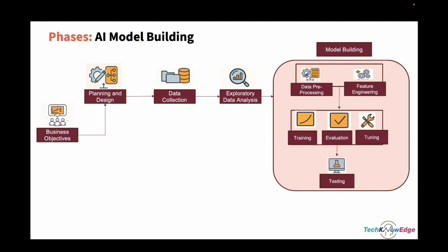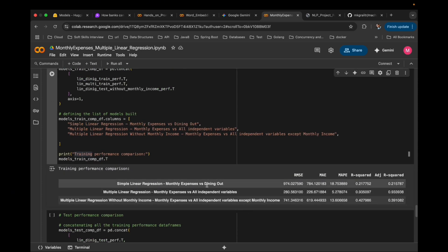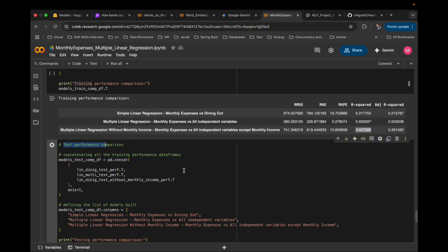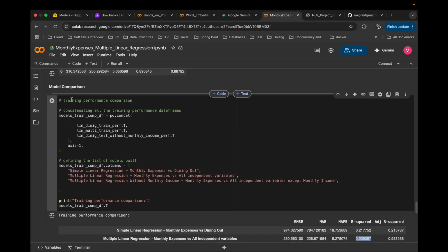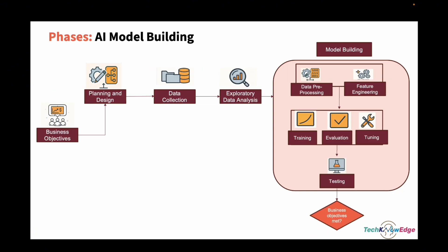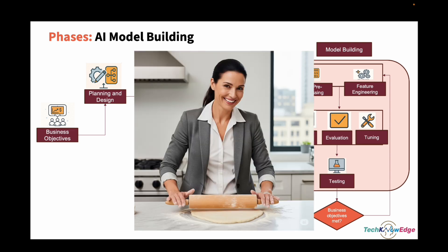Moving to testing — the final exam. We test on unseen data: the 20% we set aside. If performance holds up, the model generalizes. If not, it was memorizing. Comparing our models, notice the R-squared differences — just one variable, then all variables except income, and finally all variables together. That contrast tells a clear story. Now it's time to check: did we meet the business objective? If not, back to preprocessing, feature engineering, or even data collection. In some cases the project may need to be scrapped — and yes, your product owner might come after you with a rolling pin. But if it works, you might just be rewarded with a homemade pizza.